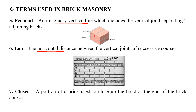Next is the Closer. This is the portion of a brick used to close up the bond at the end of a brick course. We use the portion of the brick at the end of the course.